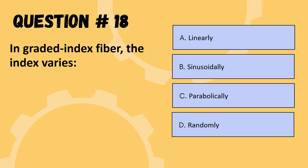Next question: in graded index fiber, the refractive index varies — options are linearly, sinusoidally, parabolically, or randomly. The correct option is C: parabolically.